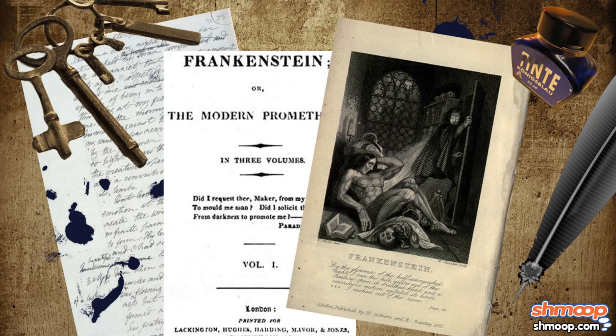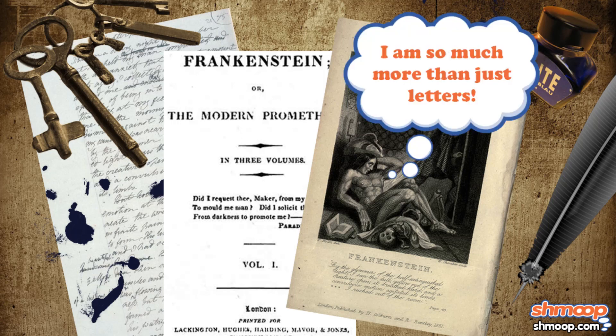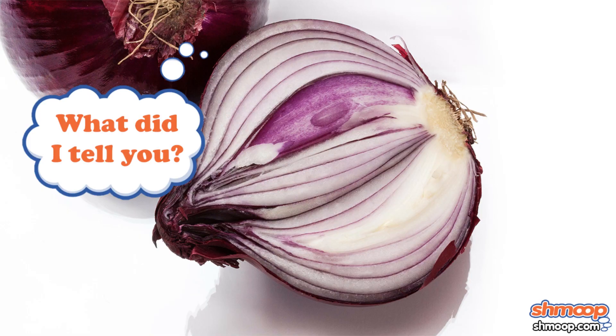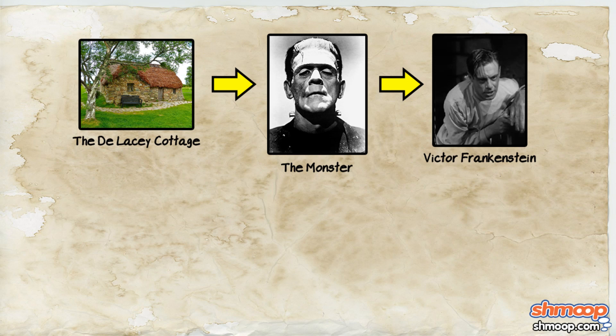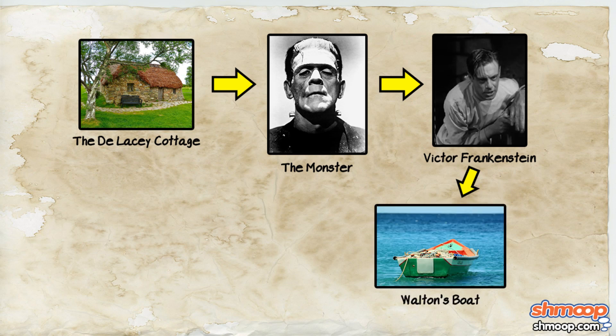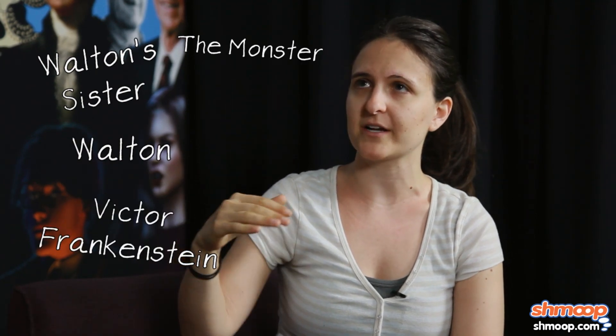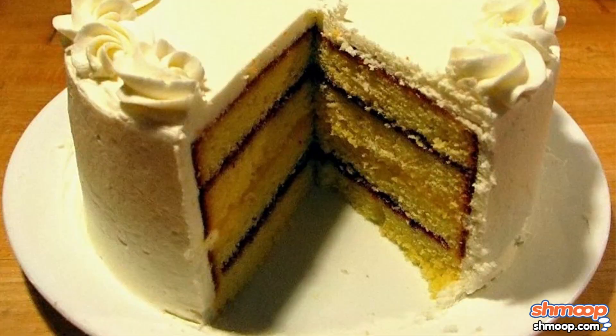Frankenstein is a particularly cool one because it's not just letters — it has so many layers of narrative. At one point in the novel, the DeLacys are hanging out and the monster is telling their story. And Victor Frankenstein is quoting the monster's story to Walton on the boat, who is recording it and writing it to his sister. So you have Walton's sister, Walton, Victor Frankenstein, Frankenstein, and the DeLacys — four or five layers of narration.